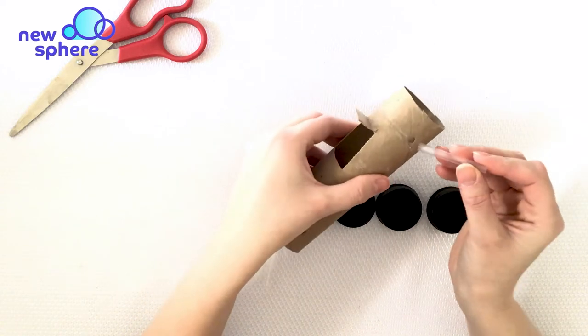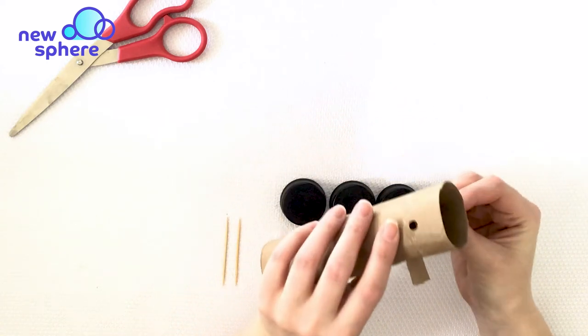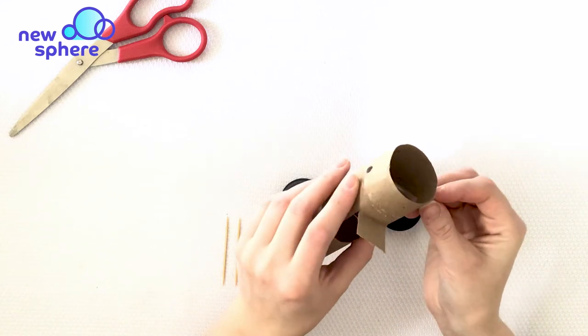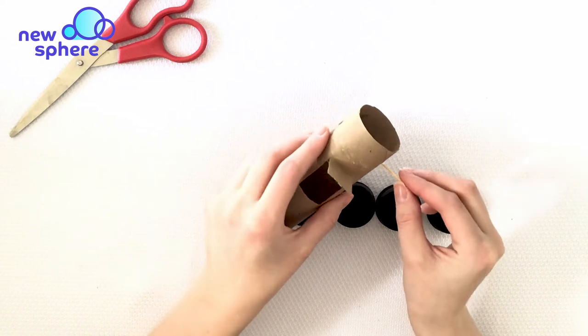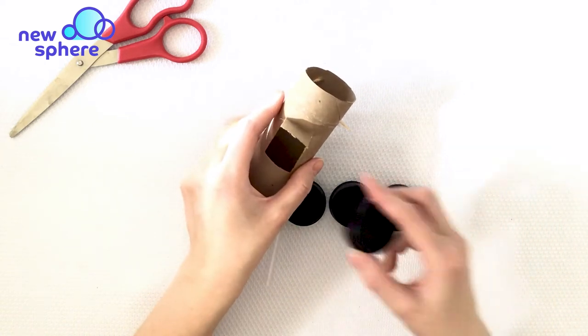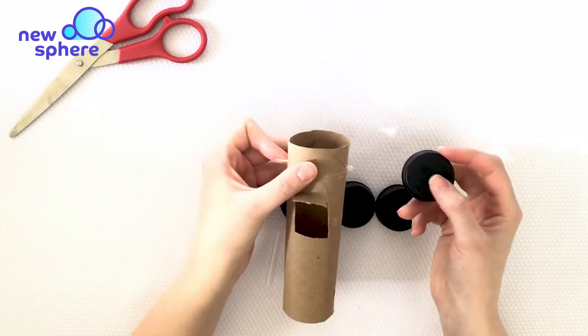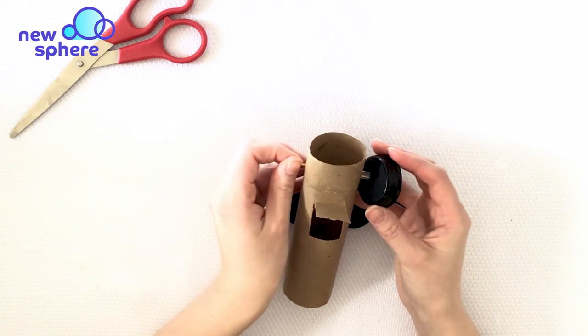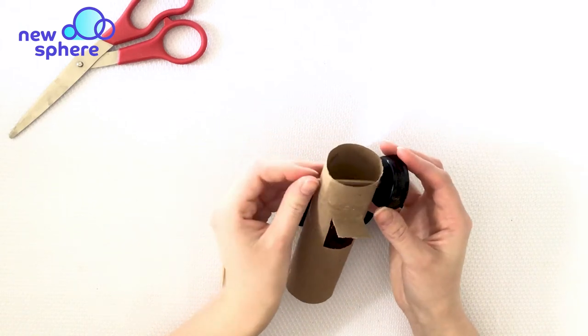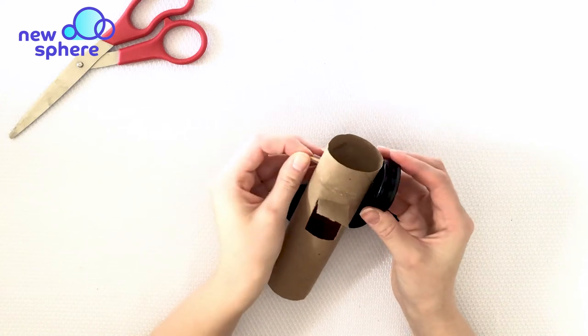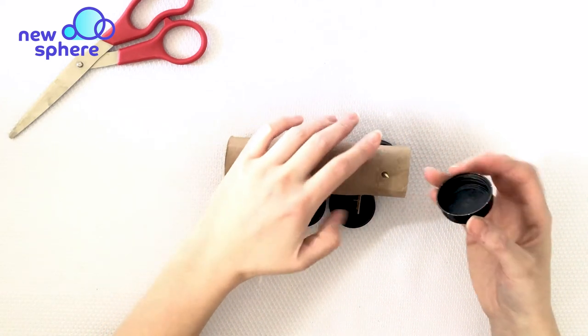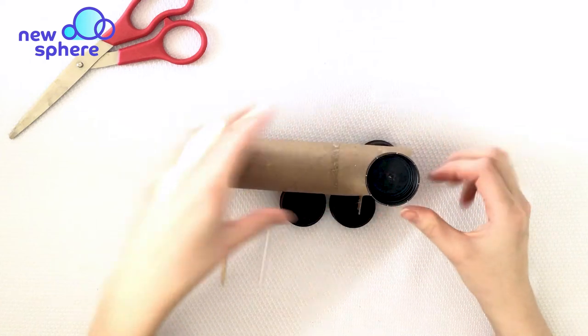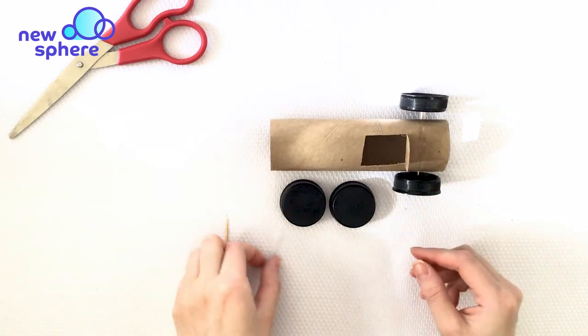Slide your drinking straw through the holes you created on your cardboard tube. Then slide your toothpick into that drinking straw and place a tire on both sides of your toothpick. You want to put the flat side against the tube and do the same on the other side.